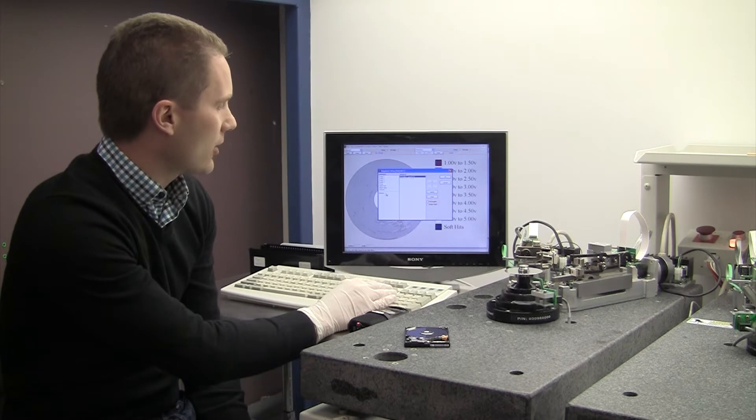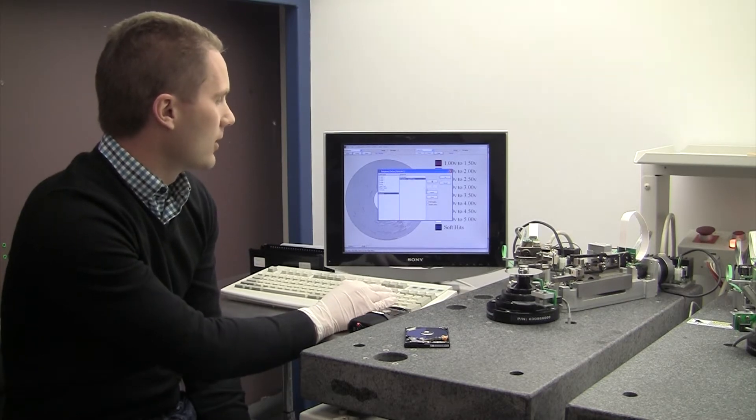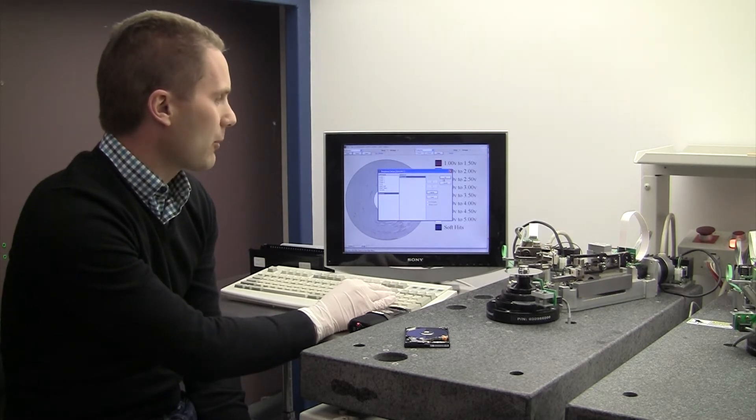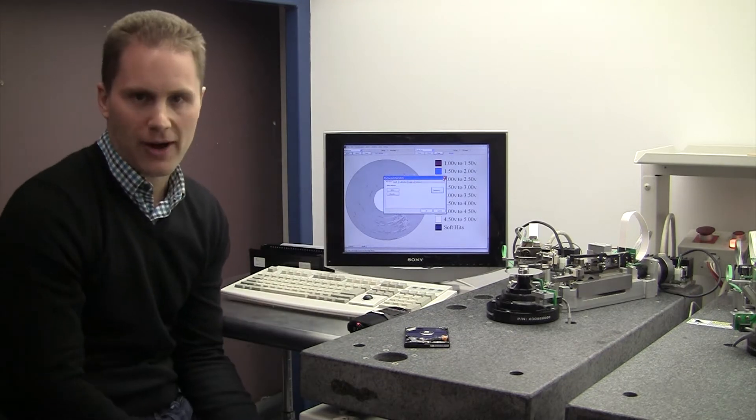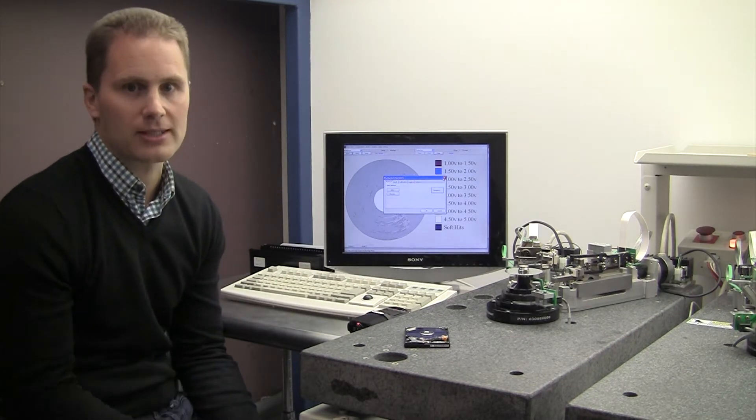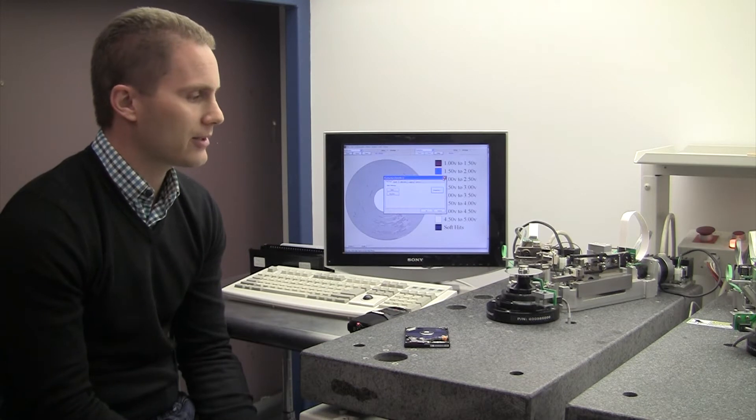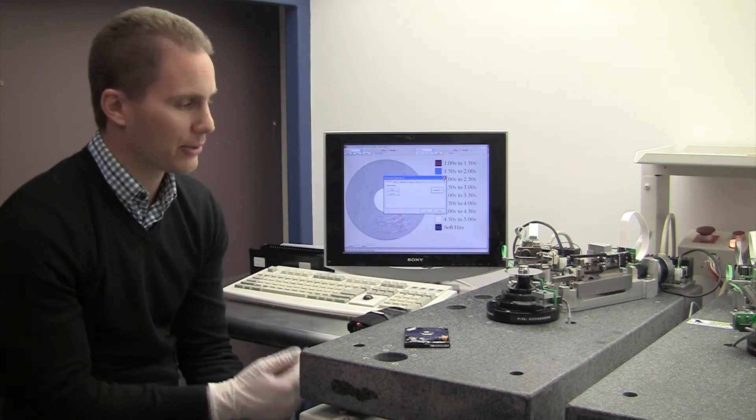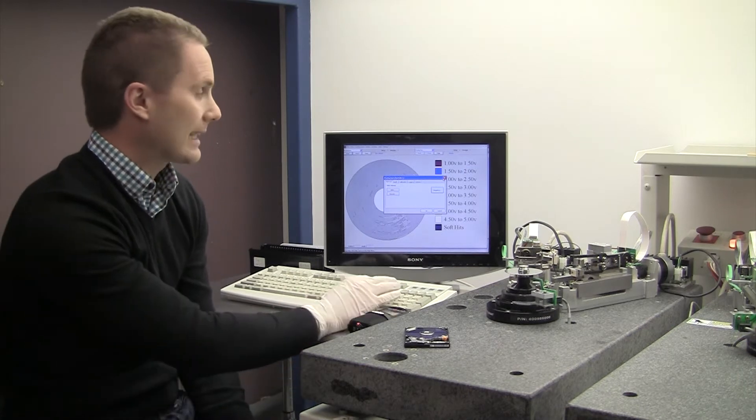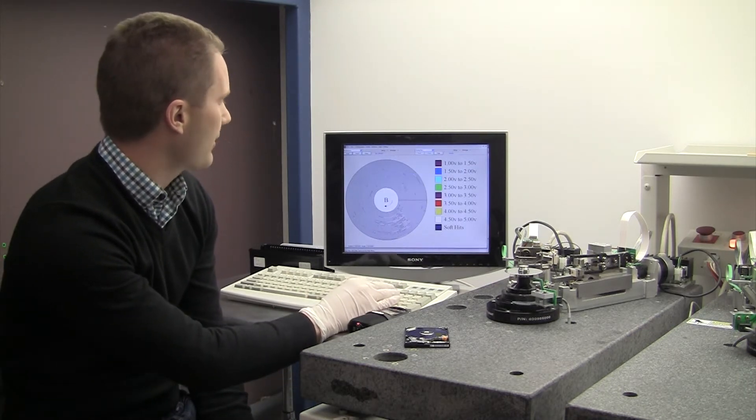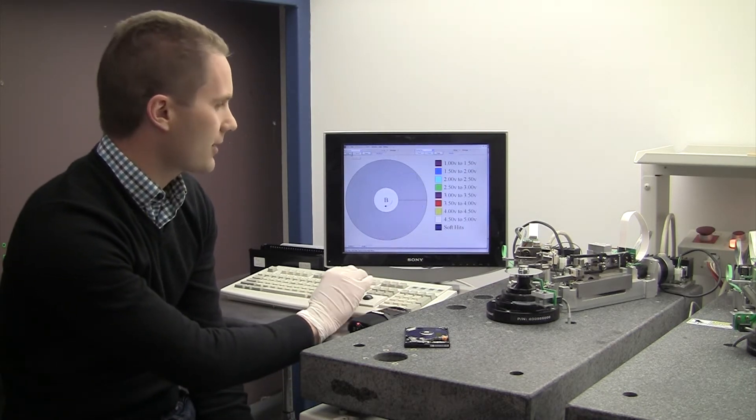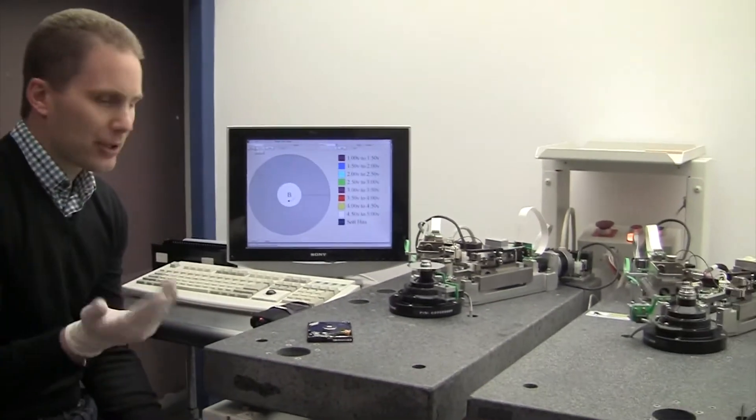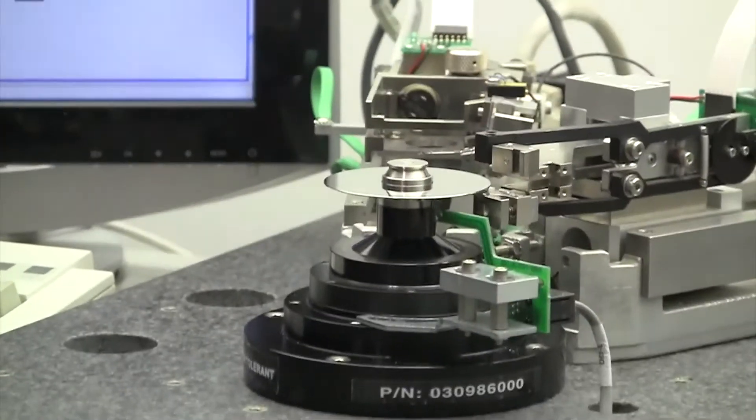So I'm going to go ahead and set up that burnishing process. Now that was pretty dirty. So I'm actually going to do a multi-pass burnish. Now when we get drives in that have been in fires or floods and they're extremely dirty, maybe they've been in sandy water, in those situations we may run 20 or 30 or 40 passes of the burnishing head before we actually get it clean. So I have this set up and I'm going to go ahead and click start.